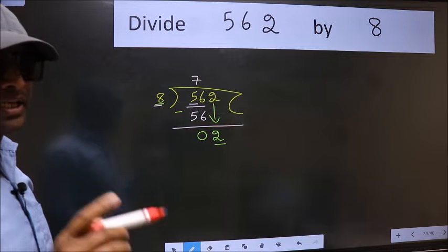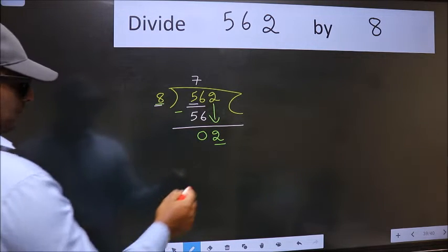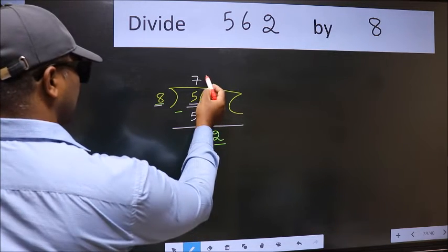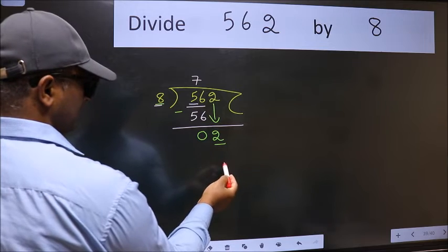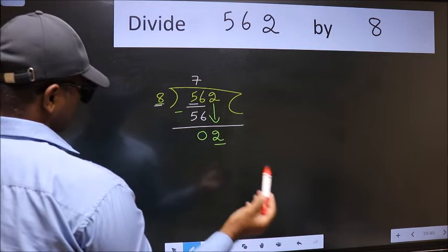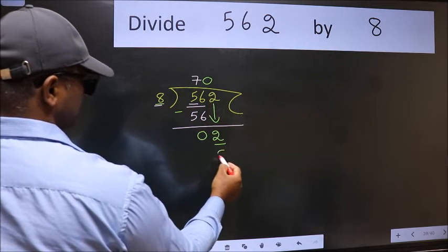Instead of that, what we should think of doing is: which number should we take here? If I take 1, we will get 8, but 8 is larger than 2. So what we do is we take 0. So 8 into 0, 0.